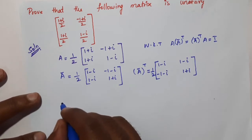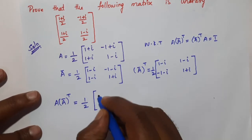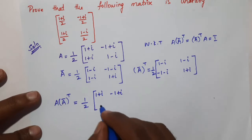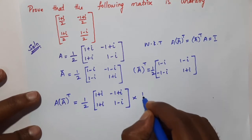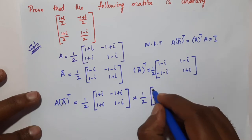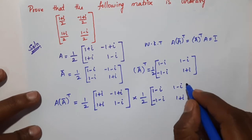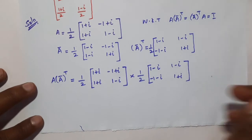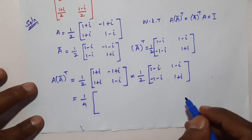Now we multiply A·Ā^T. A·Ā^T equals 1/2 times the matrix [(1+i), (-1+i), (1+i), (1-i)] multiplied by 1/2 times [(1+i), (1-i), (1-i), (1+i)]. That gives us a factor of 1/4 outside.